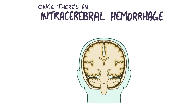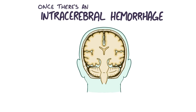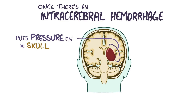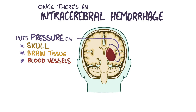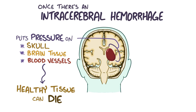Regardless of the cause, once there is an intracerebral hemorrhage, blood starts spewing from the damaged blood vessels, creating a pool of blood which increases pressure in the skull and puts direct pressure on nearby tissues and blood vessels. It also means that less blood is flowing downstream to the cells that need it, leaving the downstream tissues deprived of oxygen-rich blood. Healthy tissues can die from both the direct pressure and the lack of oxygen within a few hours.